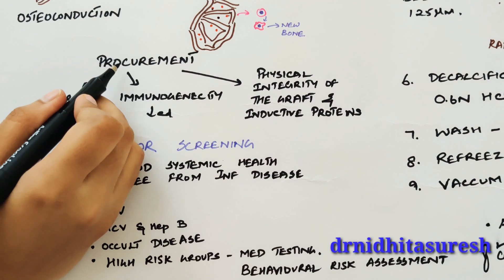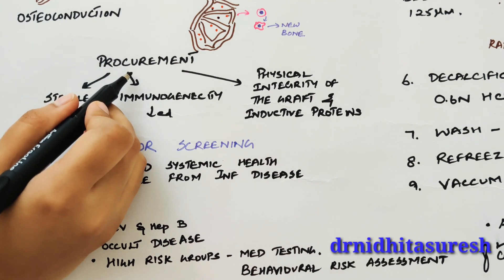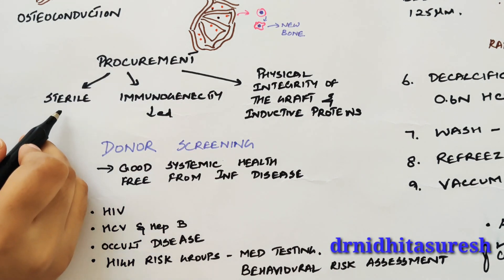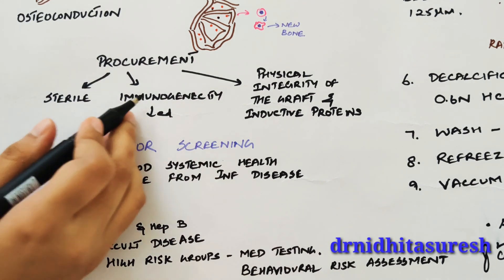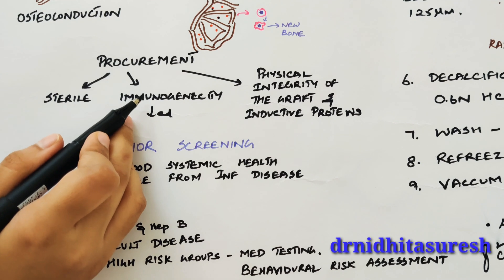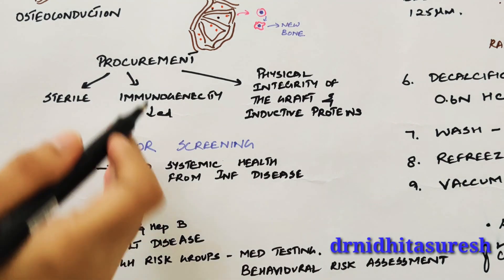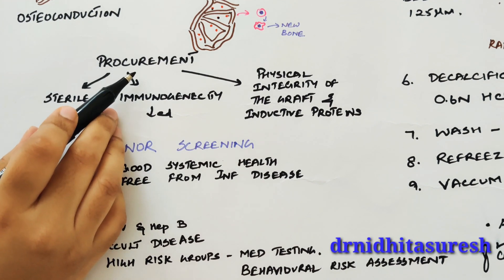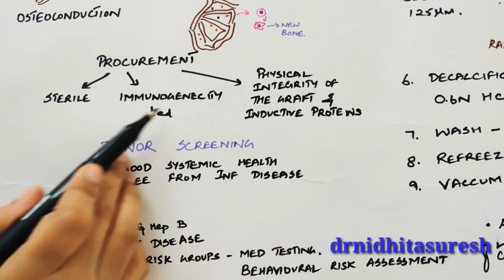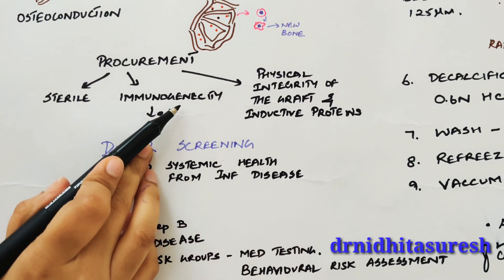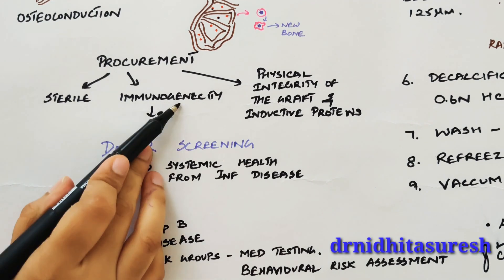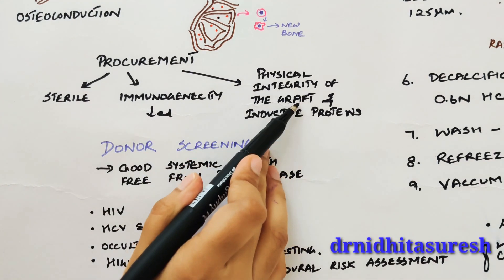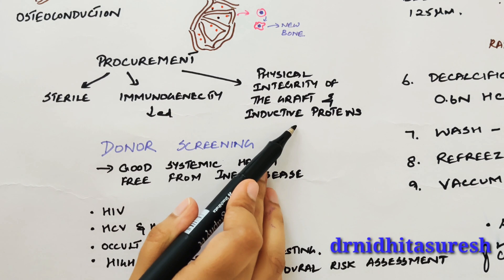When using allografts obtained from different individuals, key concerns are: is it sterile, is there any risk of disease transmission, and will it cause an immune response? To address these, the graft must be sterile and its immunogenicity decreased, while maintaining the physical integrity of the graft and its inductive proteins.